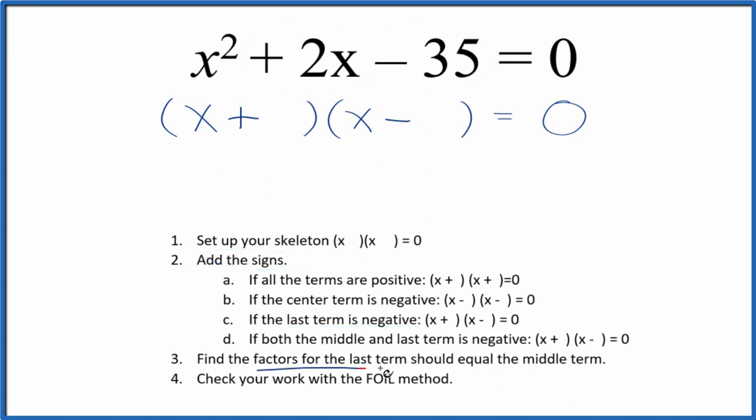Next, we're going to find the factors for the last term, that's the negative 35. And they should add up to the middle term, the 2.